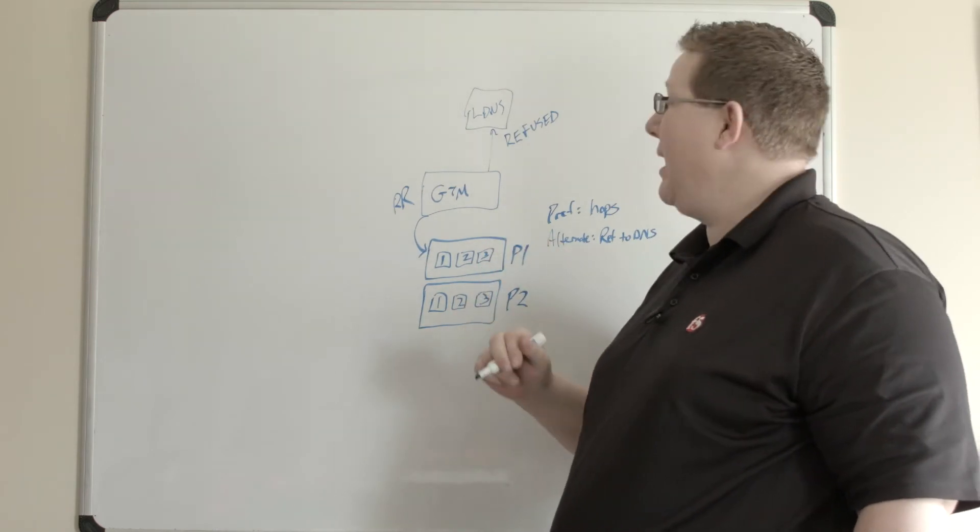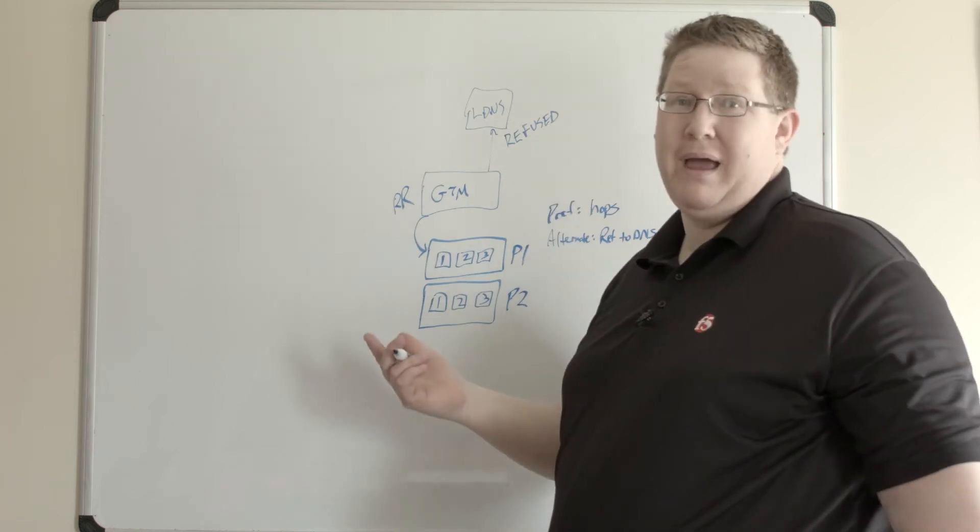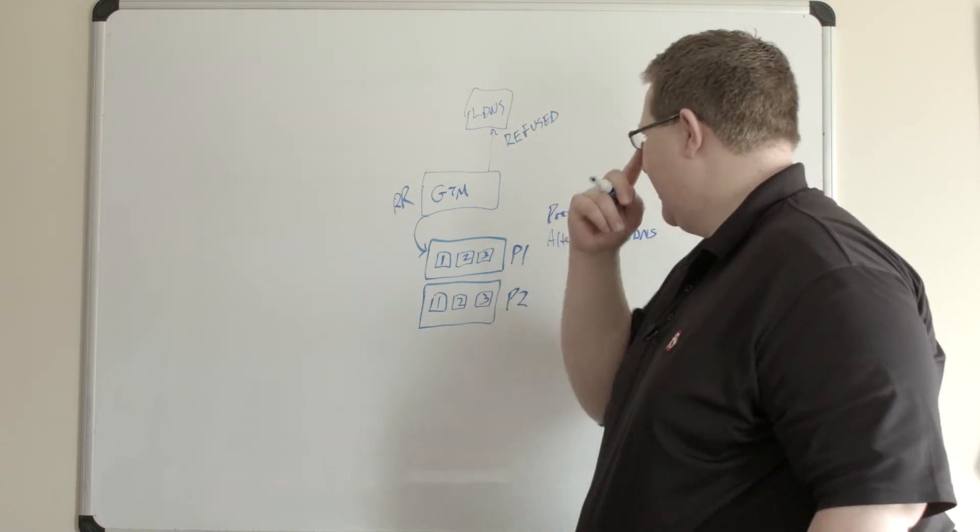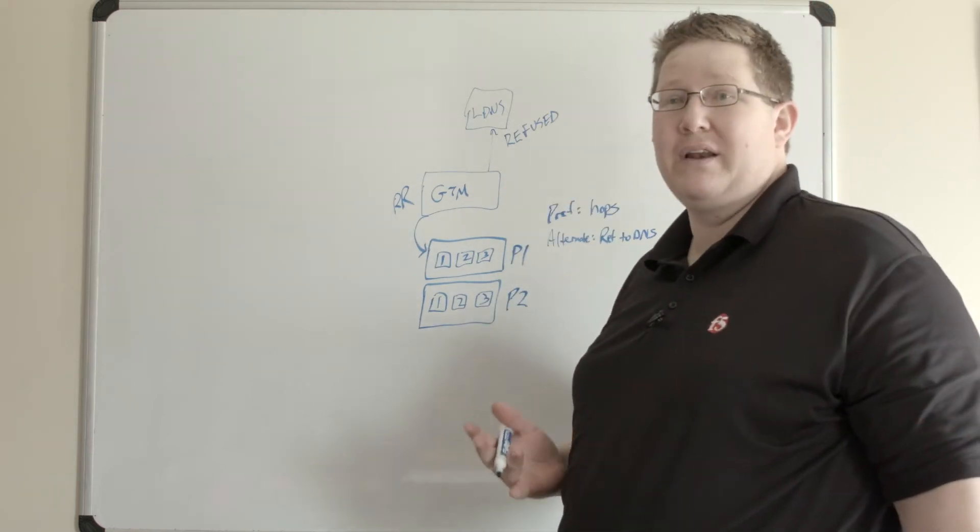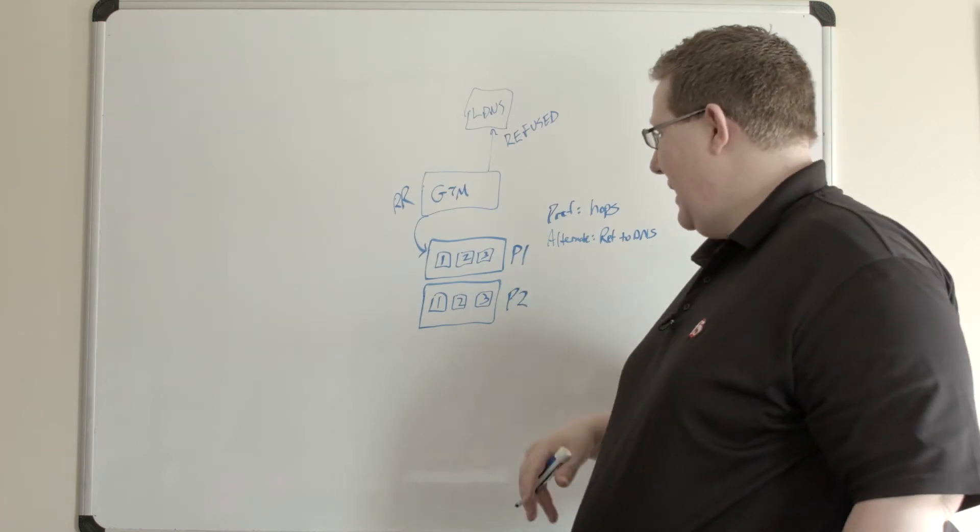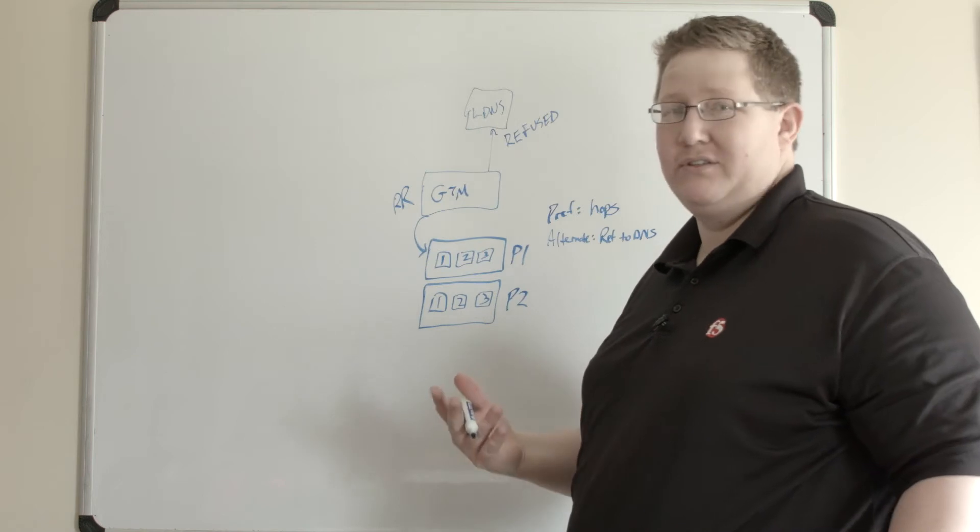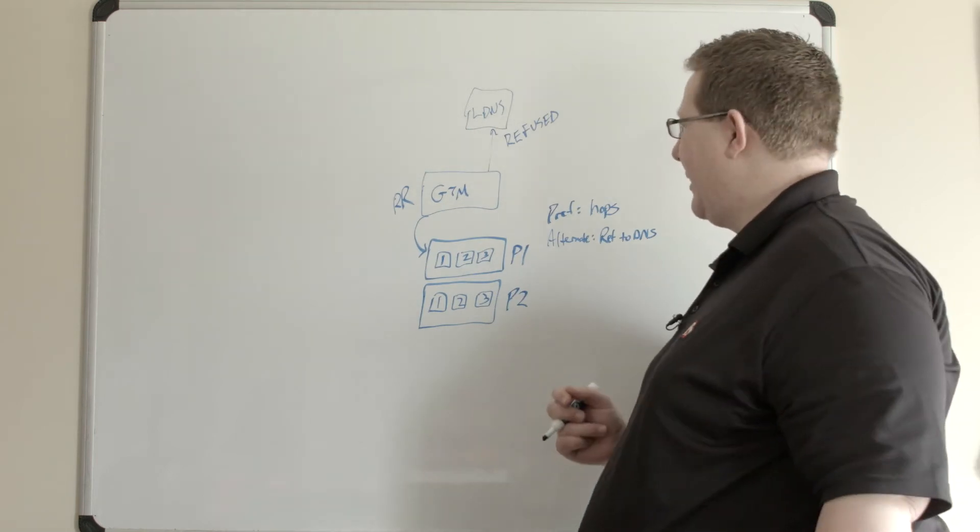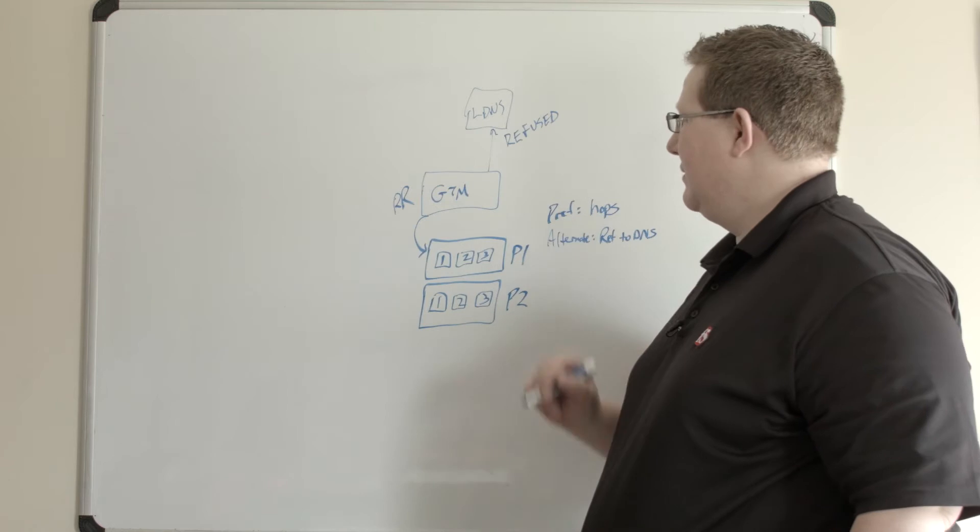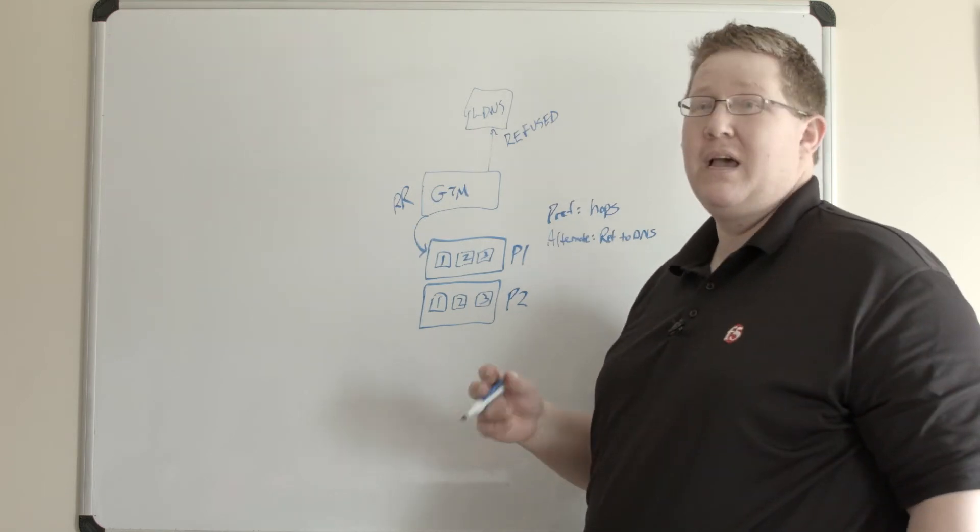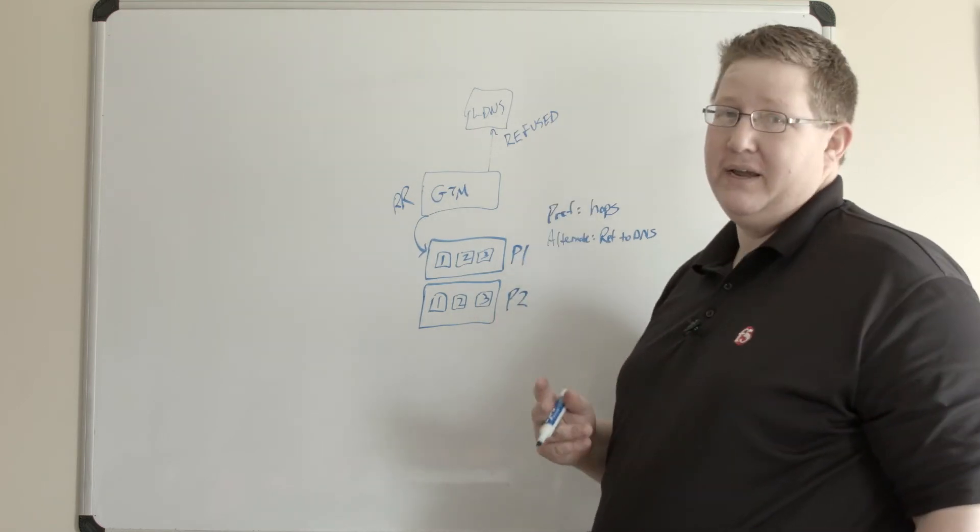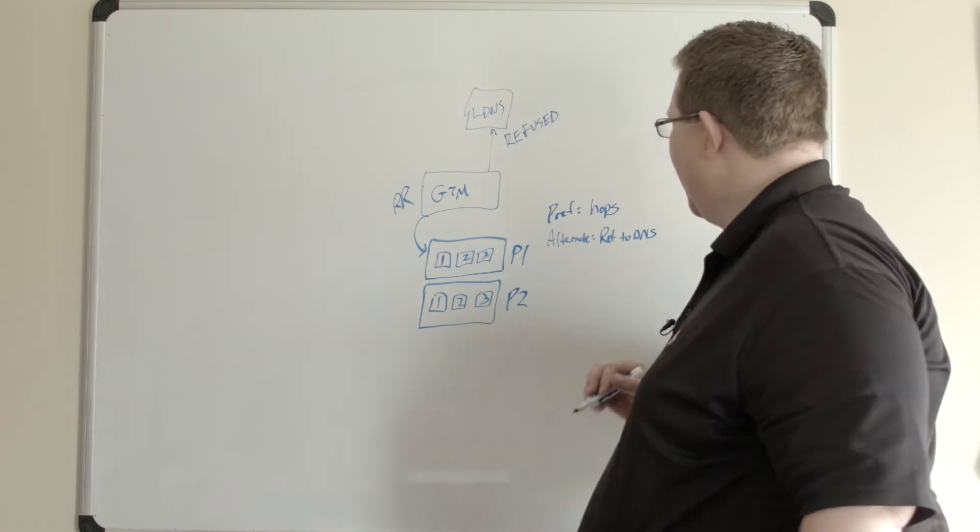It gets the request and returns that request with a response, but the response is refused. What return to DNS is good for is if you want to take a pool out of service, either because it's down, you're going to do maintenance, or you're struggling with some kind of capacity issue in a particular area. You can use return to DNS and it will actively signal to the LDNS that it's unavailable.